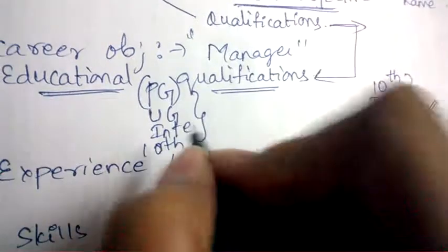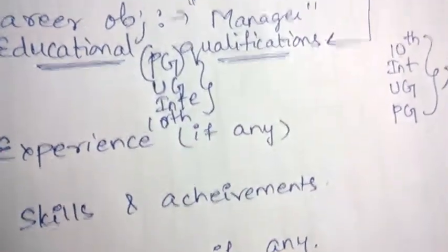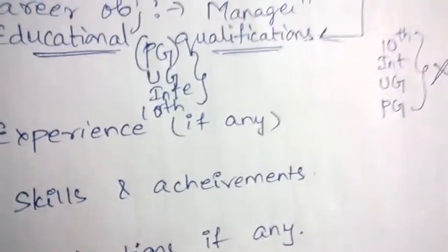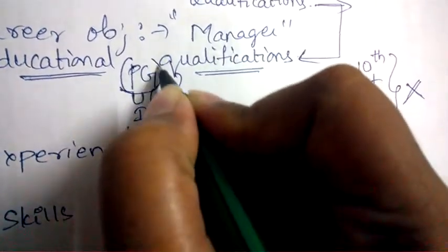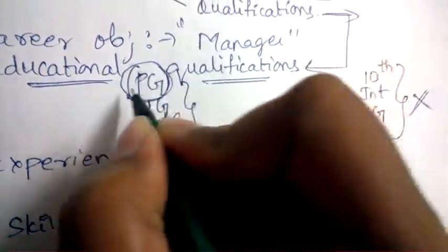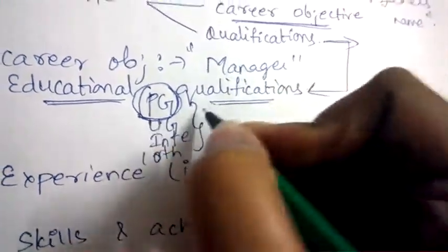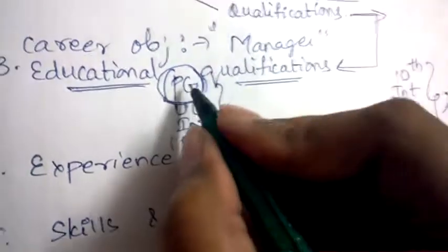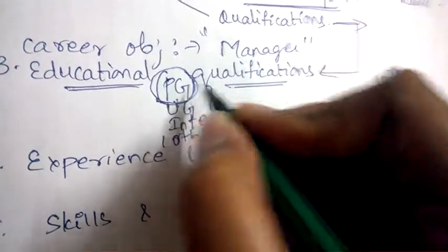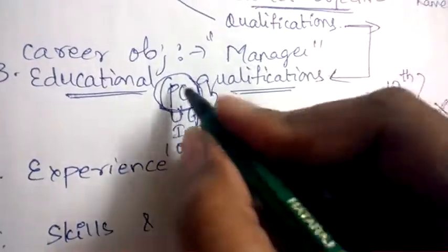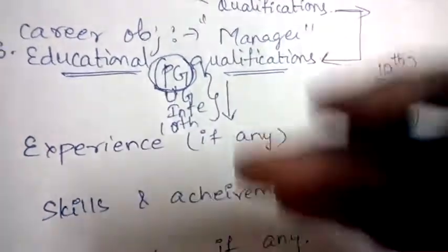The reason for this is that HR will have hundreds and thousands of resumes to review and won't have time to go through every qualification. They just want to know your most recent qualification to decide whether you are suitable for the job. So always mention your PG or UG — whichever is most recent — first, then move to lower qualifications in reverse chronological order.